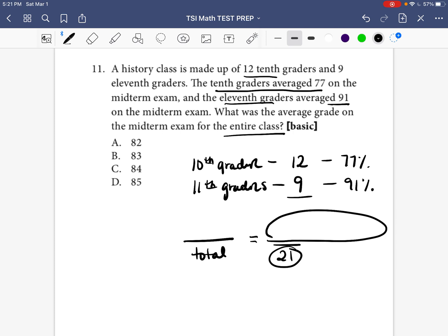So some people are just going to do 77 plus 91, but that is not correct. Because if you only have two scores on the top, you've only represented a total of two students. But we need to represent a total of 21 different scores because there's 21 different students. So we have to multiply 77 times the number of students that got 77. So 12 students got an average of 77, so we're going to do 12 times 77. And then 9 students got an average of 91, so we're going to multiply 91 times 9.